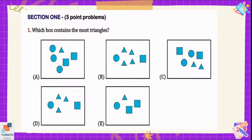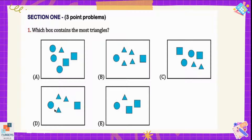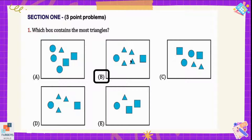Question number one: which box contains the most triangles? We can see there is only one triangle in the first box, four triangles in the second box, two triangles in the third box, three triangles in the fourth box, and only one triangle in the last box. So option B is the correct answer because it has the maximum number of triangles, which is four.